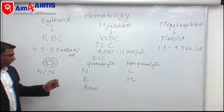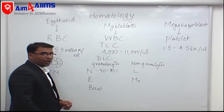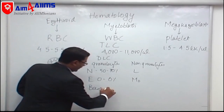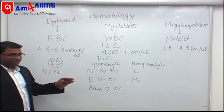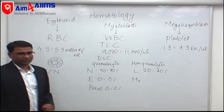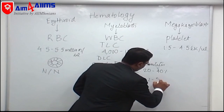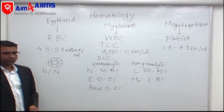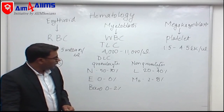We must also know their normal percentages. Neutrophils are 50 to 70%, eosinophils 0 to 6%, basophils 0 to 2%, lymphocytes 20 to 40%, and monocytes 2 to 8%. These are the differential leukocyte counts, and it is important to know the normal percentages of these cells.